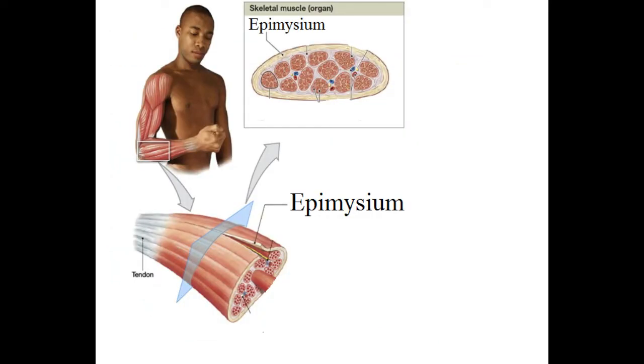If you were to dissect a muscle, you'll first come across epimysium, the outermost layer. It's thin and its function is to keep each muscle separate from the adjacent muscle.